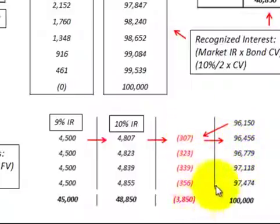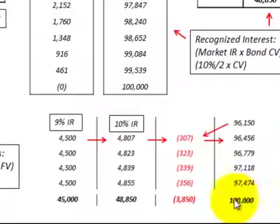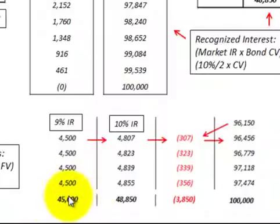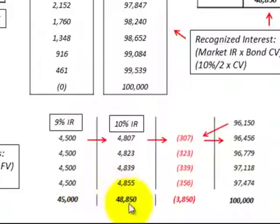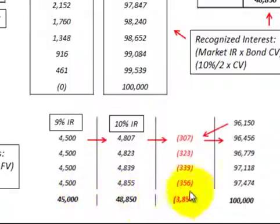We continue this process until the carrying value of the bond reaches $100,000 at the final interest payment. Looking at our totals: interest received was $45,000, which is those 10 payments times $4,500 each. The interest revenue recognized was $48,850. The difference of $3,850 is the total amortized amount of that discount on bonds receivable.